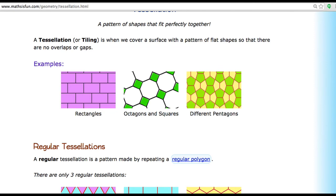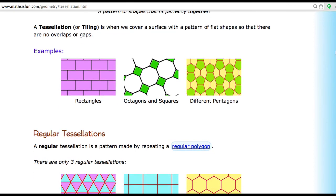Here you can see tessellation or tiling is when we cover a surface with a pattern of flat shapes so that there are no overlaps or gaps.